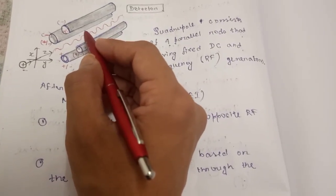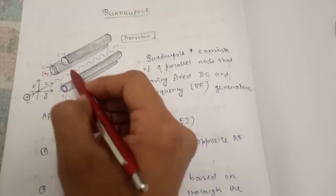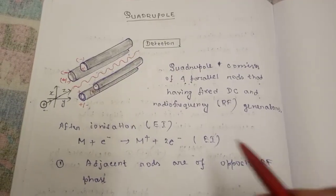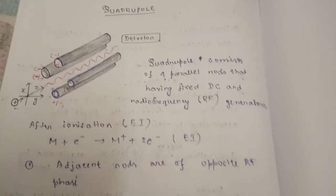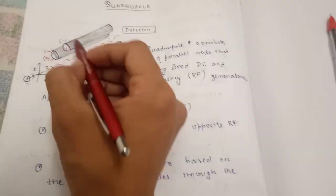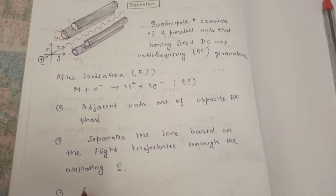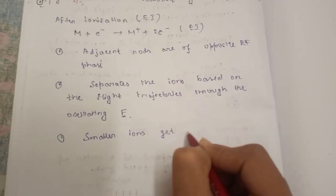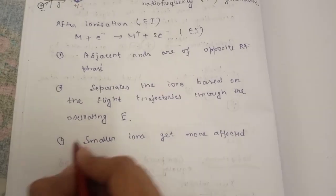The ions can move different ways. Some will create trajectories with less bending and some with more, and they will go ultimately to the detector. Due to the charge varying in this region, smaller ions get more affected due to the electric field.